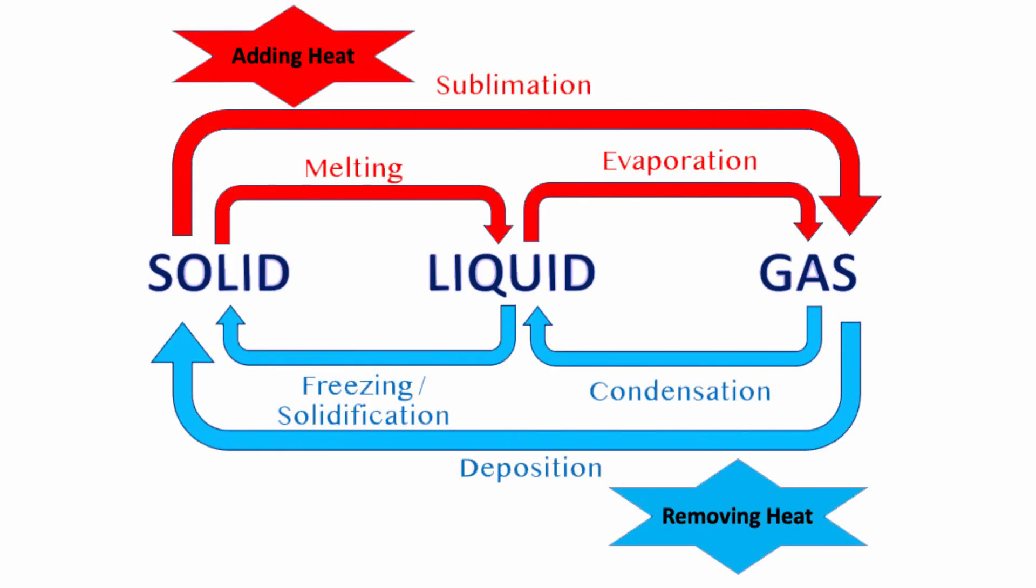When summarizing the changes in state of matter, I'd love to look at a diagram like this one. It represents these changes clearly and shows whether we're adding or removing heat in order for those changes to occur. This sort of diagram would be very good to put into your summary notes or your revision notes if you need this for an exam.